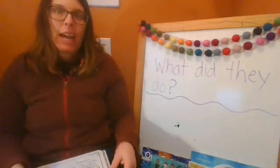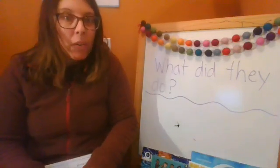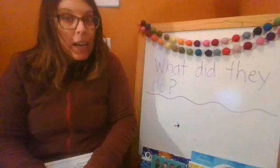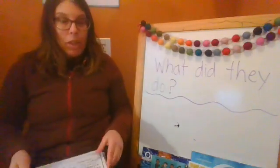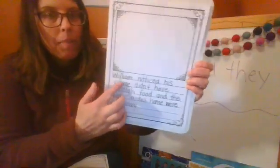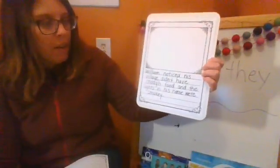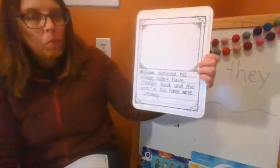So yesterday we wrote the page about explaining what our mover and shaker noticed as a problem in their community or in their world. We talked about what they noticed and I wrote about William Kamkwamba that William noticed his village didn't have enough food and the lights in his home were smoky.